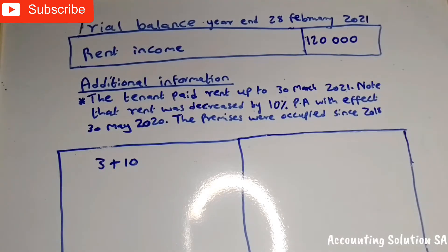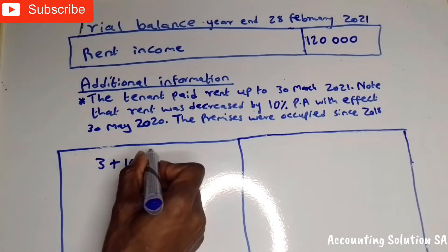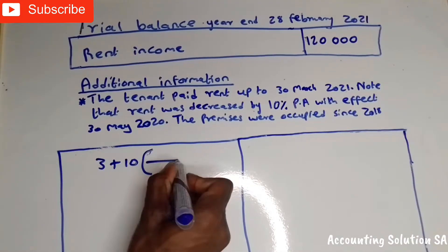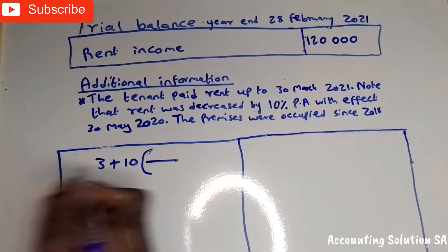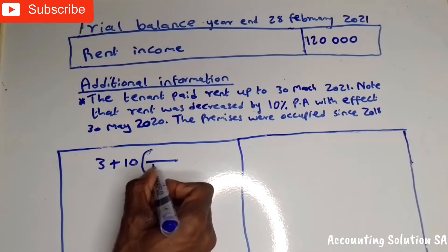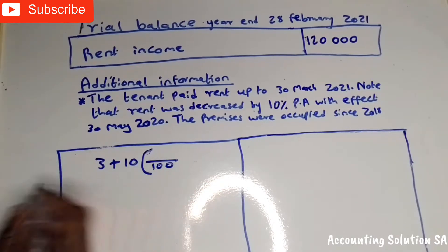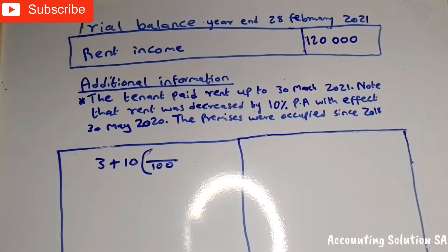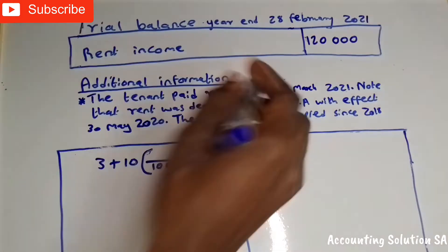That gives us 13 months in total. Make sure you split them according to how you count them. Open a bracket — remember, the denominator is always 100 and the numerator depends on whether it's an increase or decrease. In this case, because it's a decrease, you say 100 minus 10. If it were an increase, you would say 100 plus 10.